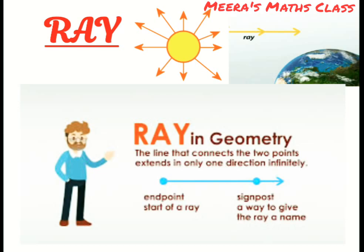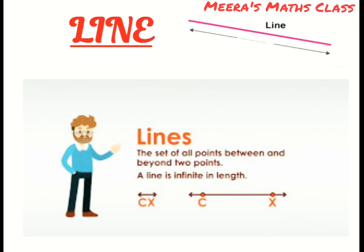So ray in geometry is the line that connects the two points but it extends in only one direction infinitely. You can see there are two points. One is endpoint where the ray starts, but the second point is there only to name it, but that side it extends infinitely where you can see there is an arrow.